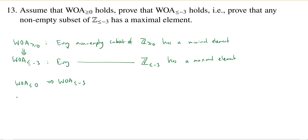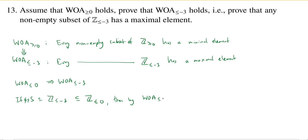Why is that true? We assume WOA ≤ 0 holds, and let S be a non-empty subset of Z ≤ -3. But Z ≤ -3 — the set of integers less than or equal to -3 — is a subset of Z ≤ 0, since all those integers are also ≤ 0. Therefore S is a non-empty subset of Z ≤ 0, and by WOA ≤ 0, S has a maximal element.